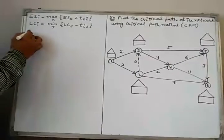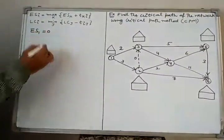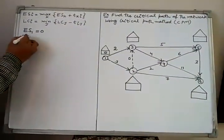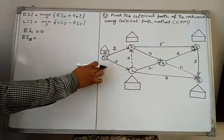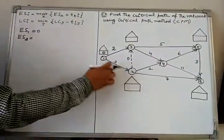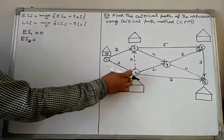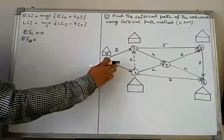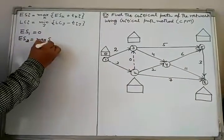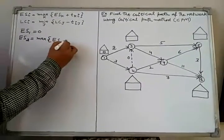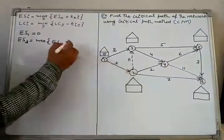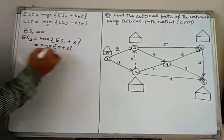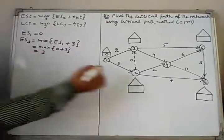By convention, the earliest start time of the first node is 0. Therefore, we take the earliest start time of the first node as 0. Now we have to find the earliest start time of the second node, ES2. First, look at the activities that end at node 2 — here one activity ends at node 2. Therefore, earliest start time of node 2 equals ES1 plus the time duration of that activity, which is 3. That is, maximum of 0 plus 3 equals 3. Therefore, earliest start time of the second node is 3.